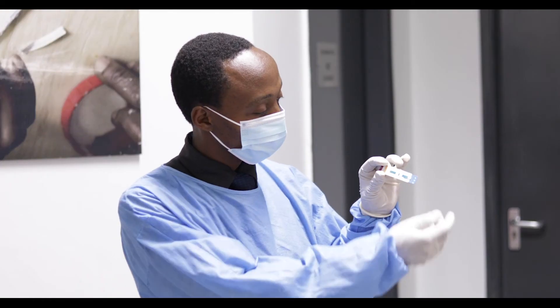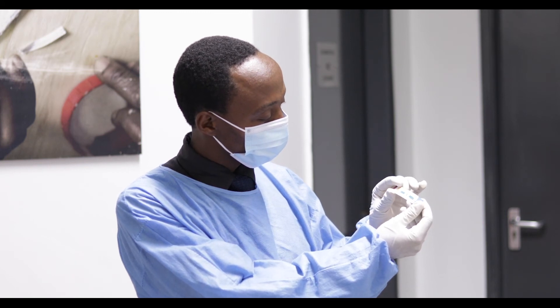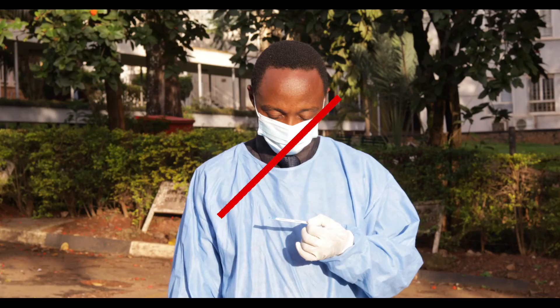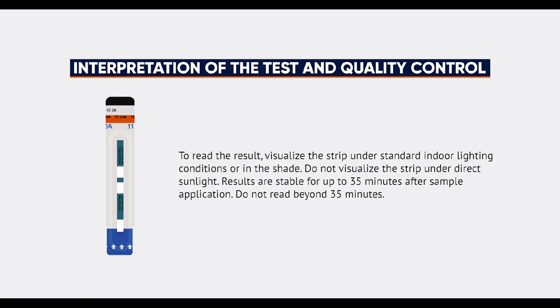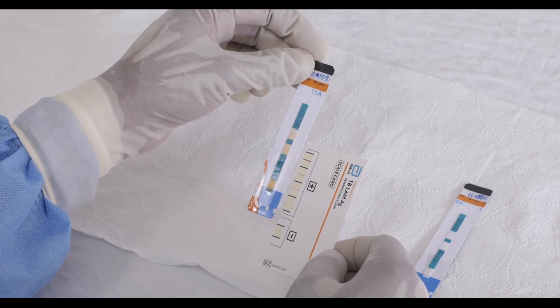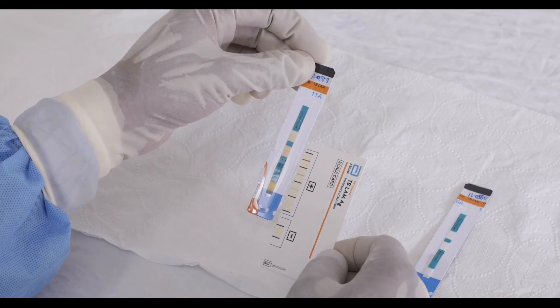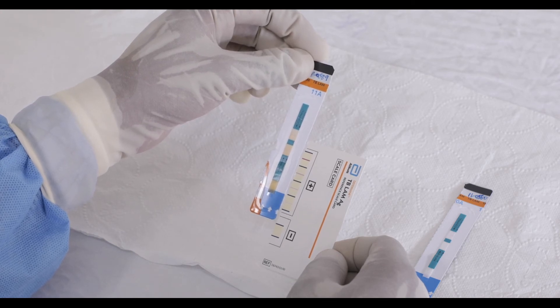After 25 minutes of incubation, your results are ready to be interpreted. To read the result, visualize the strip under standard indoor lighting conditions or in the shade. Do not visualize the strip under direct sunlight. Results are stable for up to 35 minutes after sample application — do not read beyond 35 minutes. Use the reference scale card provided in the kit to assist with results reading and interpretation by holding it alongside the patient window.